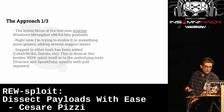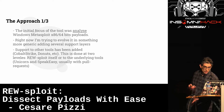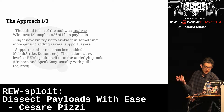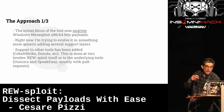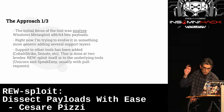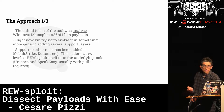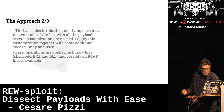I'm now trying to evolve RE-sploit into something more generic, adding support layers for Cobalt Strike, Donut, and others. The tool implements helpers and fix-ups to complete the emulation of these payloads. My contributions also go back to open source — I've submitted several pull requests to Mandiant's SpeakEasy with new API calls. I encourage you to build your own project and give back to the community.